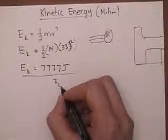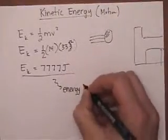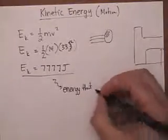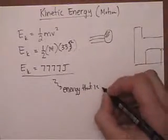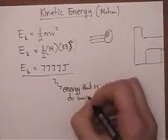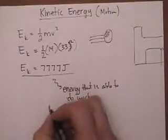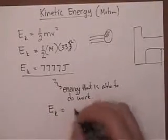Let's take this and let's just write down that this is the energy that is able to do work. Okay, so that's what that 7,777 joules is able to do. So that means then that my kinetic energy is essentially work.